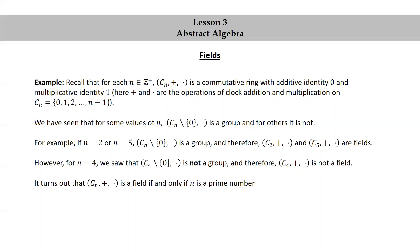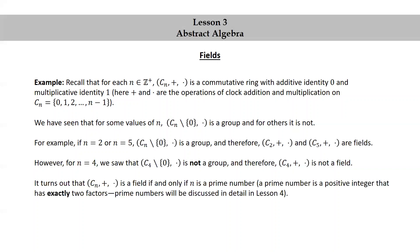It turns out that (Cₙ, +, ×) is a field if and only if n is a prime number. A prime number is a positive integer that has exactly two factors. We'll be discussing prime numbers in detail in the next lesson, lesson 4.